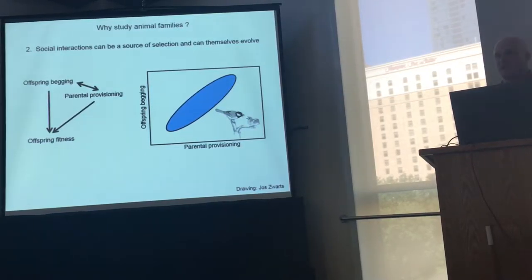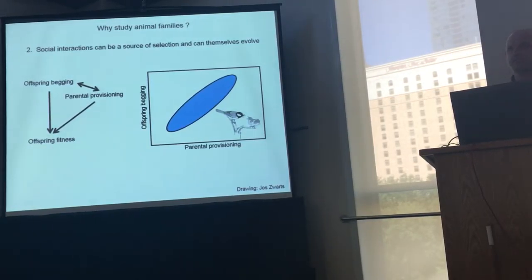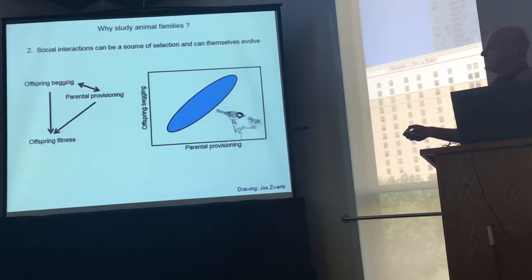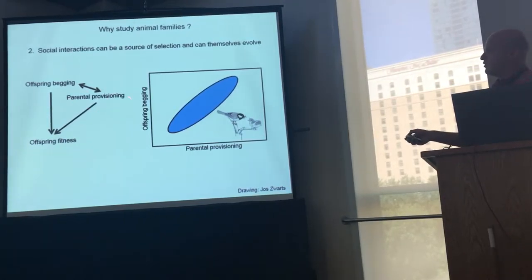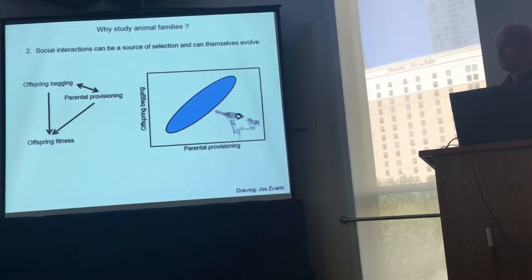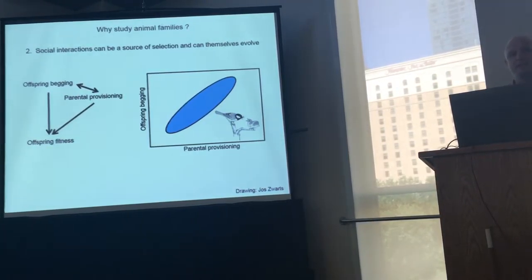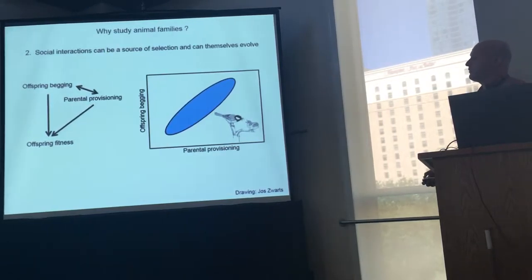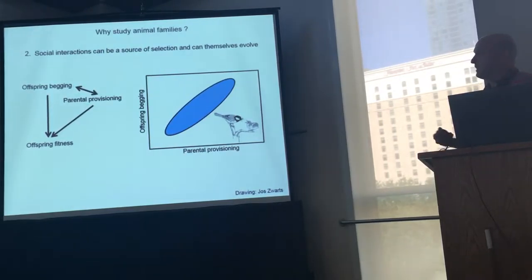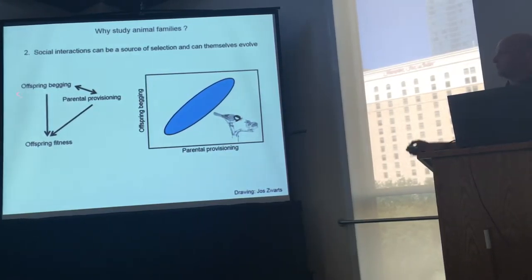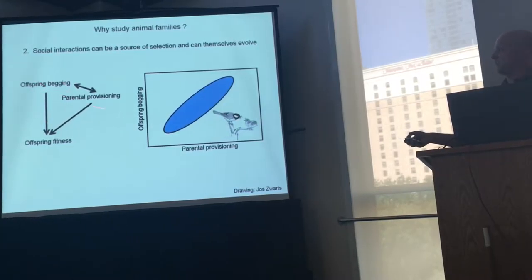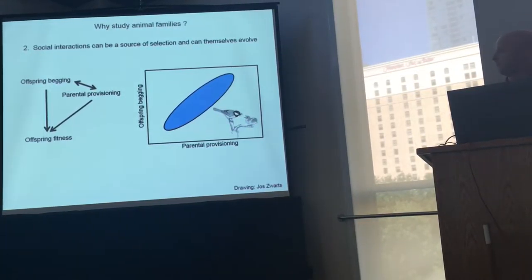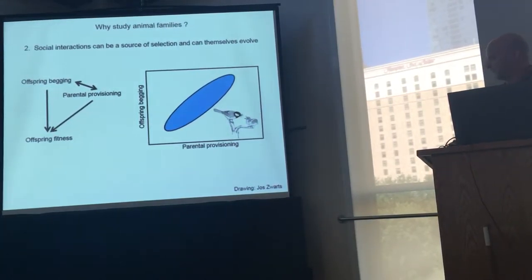We've been studying this sort of co-adaptation from a slightly different perspective. What we've been doing is manipulating one component — we've been manipulating the possibility for parental provisioning over evolutionary timescales — and ultimately we want to ask how manipulating that influences the evolution of traits expressed in offspring as well as traits expressed in parents that both influence offspring fitness.